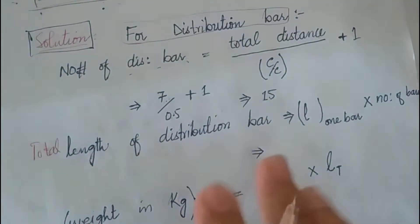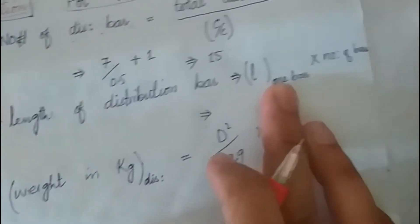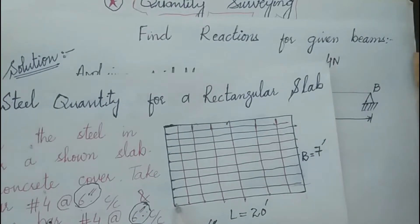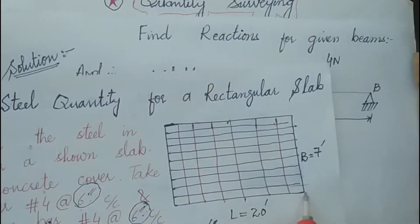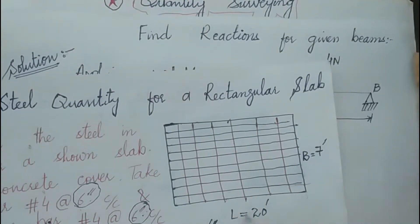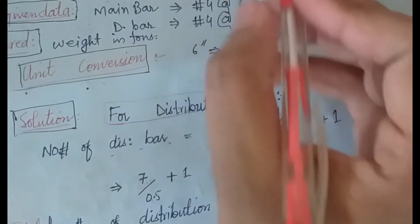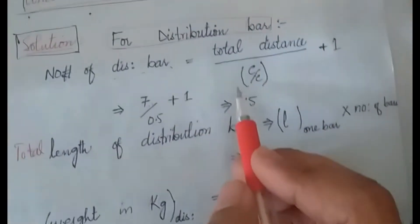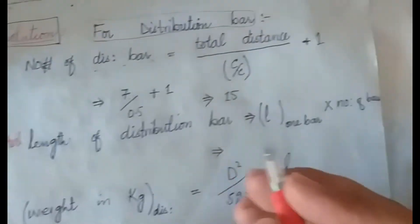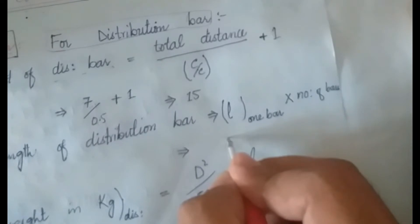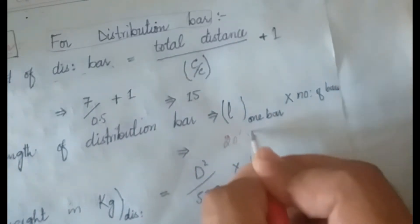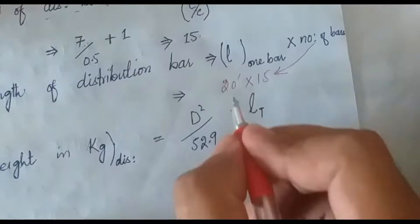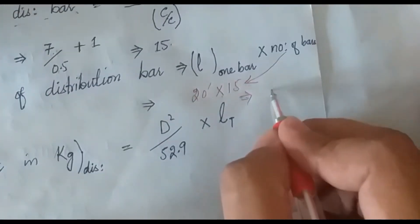Next, we find the total length of the distribution bars. The formula is: length of one bar multiplied by number of bars. The length of one distribution bar spans the longer direction, which is 20 feet. So the total length is 20 feet multiplied by 15 bars, which gives 300 feet.